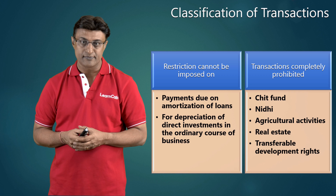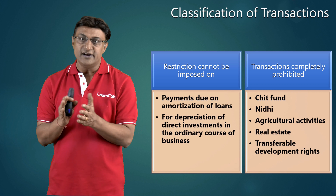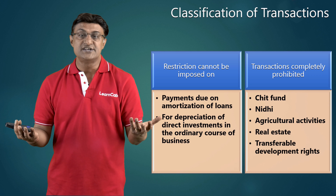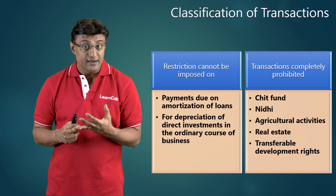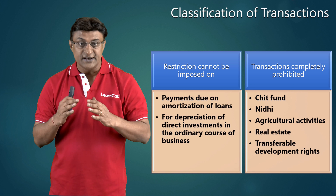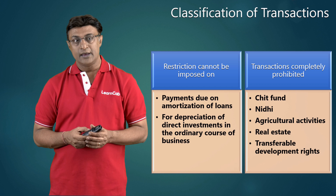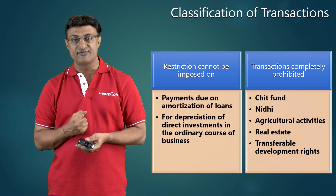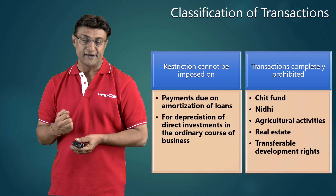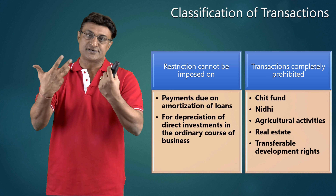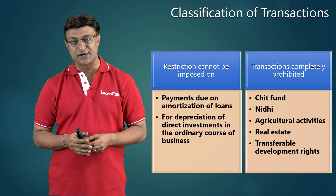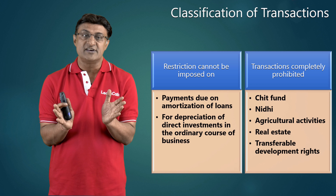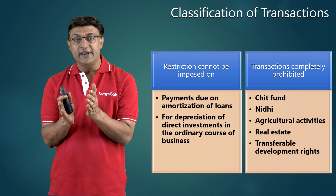They cannot be restricted — we have seen this before. What are the completely prohibited transactions? Chit funds — popular in South India, particularly Kerala. A chit fund is a method whereby different members contribute a certain sum of money every month towards a fund, and every month one of them — depending on need or auction — receives the lump sum amount. In a chit fund in India, a person resident outside India cannot contribute, and a person resident in India cannot contribute in a chit fund operated outside India.